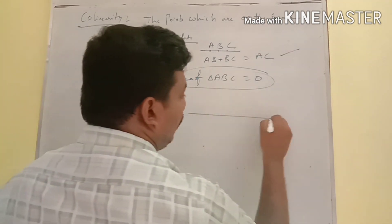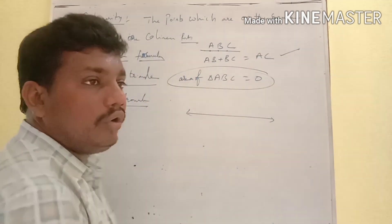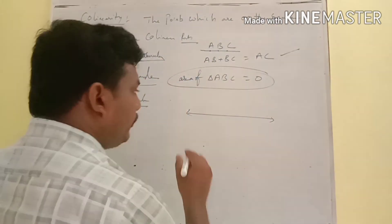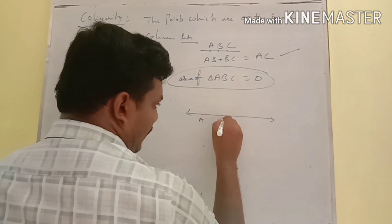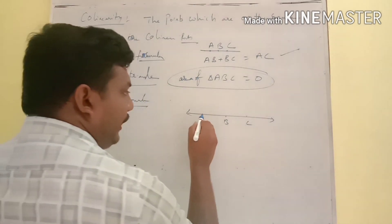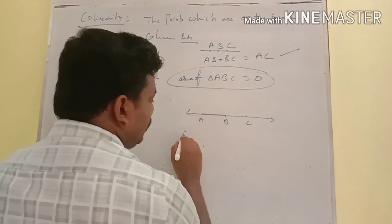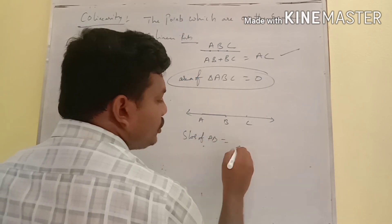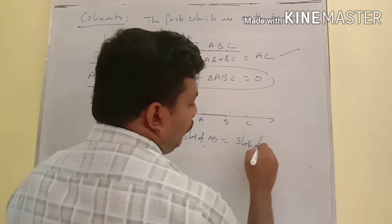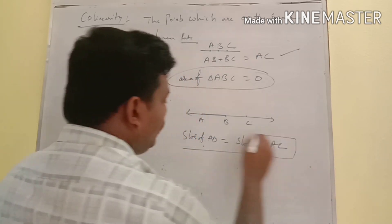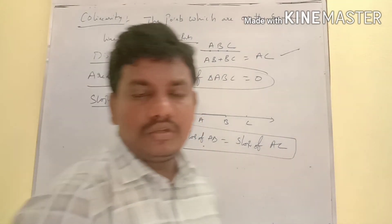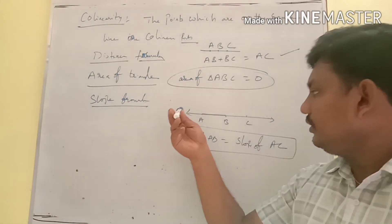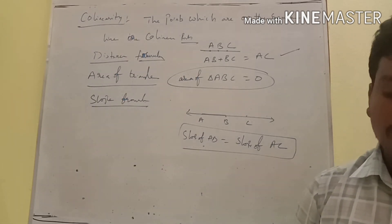For the slope method, we know that the slope of a line is unique. So between any two points A, B, and C, if the slope of AB equals the slope of AC, then the points are collinear.